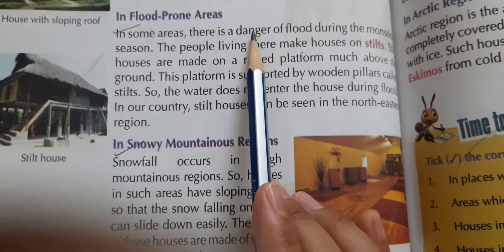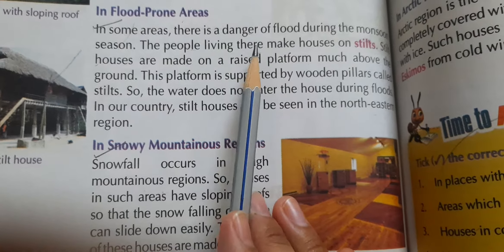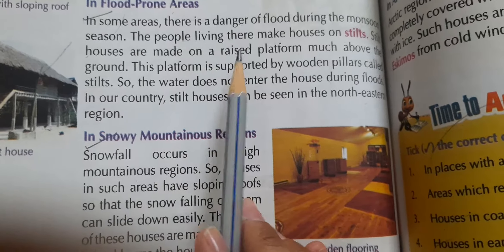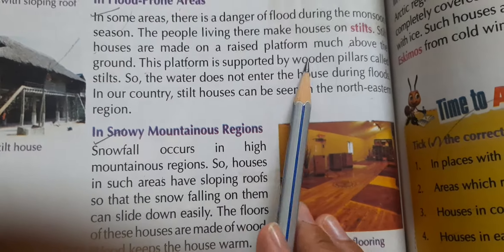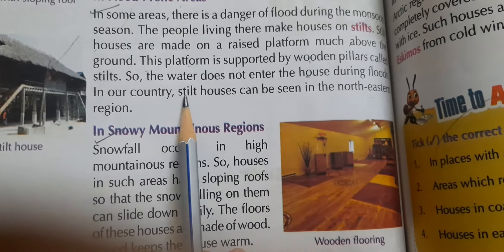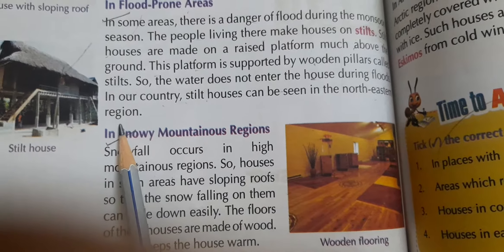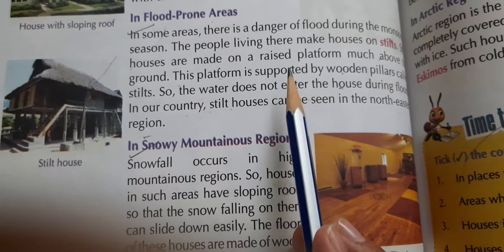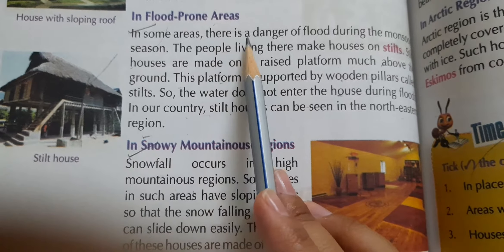In flood prone areas, there is danger of floods during the monsoon season. People living there make houses on stilts. Stilt houses are made on a raised platform, much above the ground, supported by wooden pillars called stilts, so water does not enter the house during floods. In our country, stilt houses can be seen in the northeastern region.